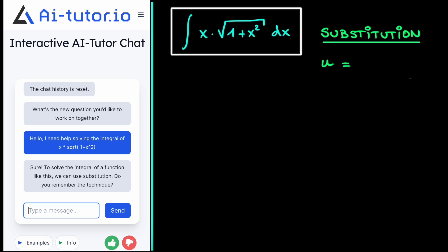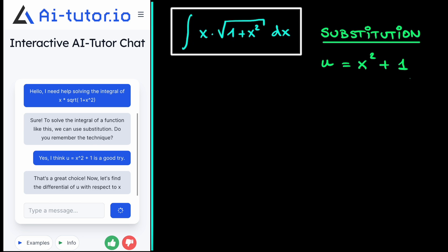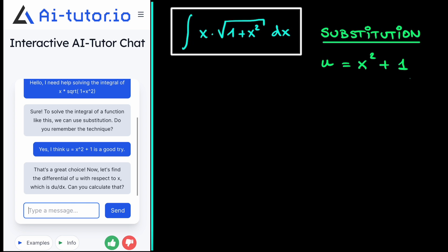Therefore, a suggestion for substitution could be that we replace this 1 plus x squared with our u. So we propose that our substitution variable u is equal to x squared plus 1. And now we can check with the AI tutor to see whether this is indeed the right choice. So we fill in that we think that u is x squared plus 1 is a good choice. And it says that's a great choice.